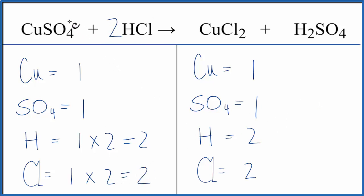Often when we have these polyatomic ions, as long as they stay together in the reaction and they're on both sides, you can count them as one item. It makes the balancing a little bit easier.